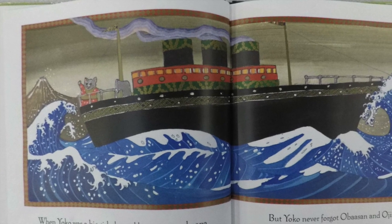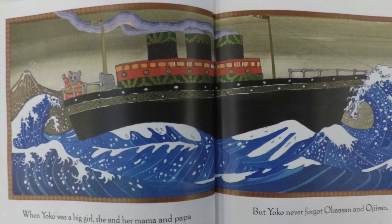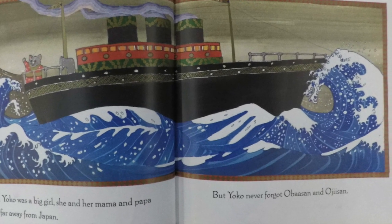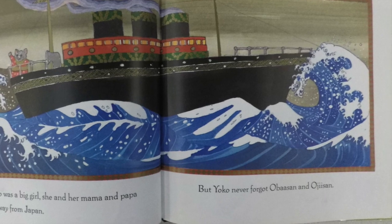When Yoko was a big girl, she and her mama and papa sailed far away from Japan. But Yoko never forgot Obasan and Oji-san.